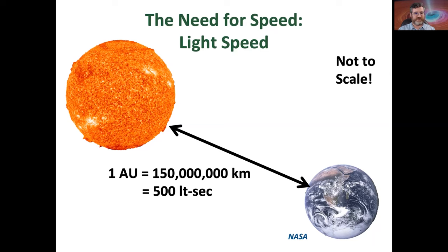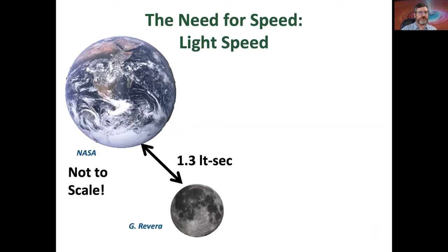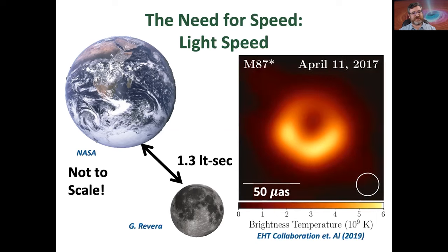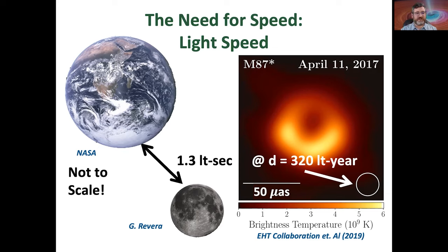We can even think of smaller scales than 500 light seconds — for instance, the distance from Earth to the Moon is about 1.3 light seconds. If we're just beginning to make images of supermassive black holes that are 200 light seconds in scale, imaging on the scale of light seconds is still impossible. In fact, either M87 or Sagittarius A* would have to be about 320 light years away or closer for us to make an image on the scale of light seconds.